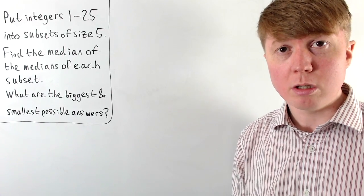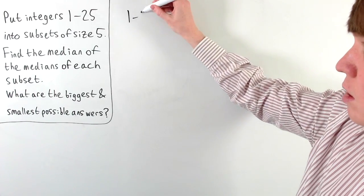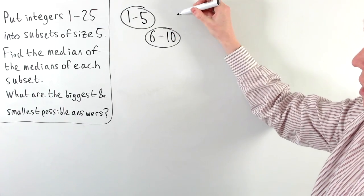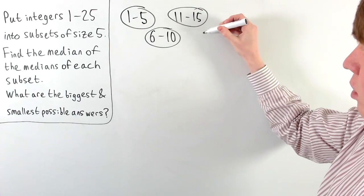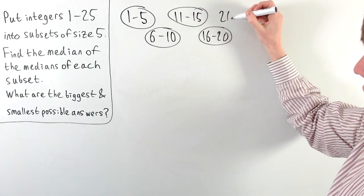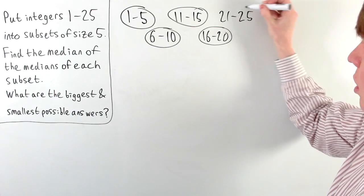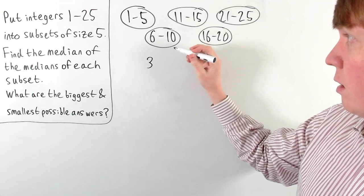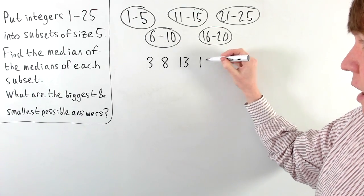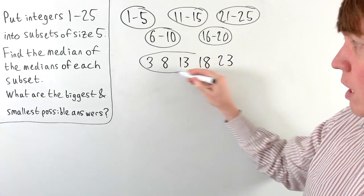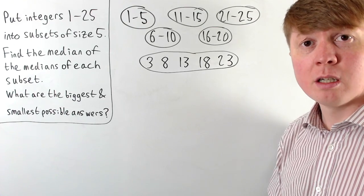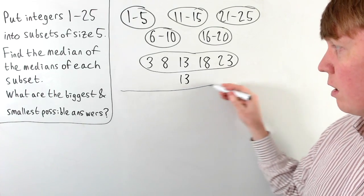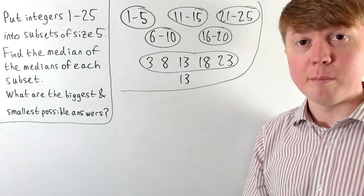To illustrate what's going on, we'll look at a simple example where our first set is the integers from 1 to 5, then our second subset is 6 to 10, then 11 to 15, 16 to 20, and finally 21 to 25. The median of each subset gives us 3, 8, 13, 18, and 23 respectively. So the final median of all of these medians is going to be 13, and it's definitely possible to get 13 as our median of medians.